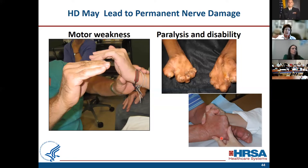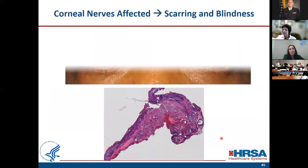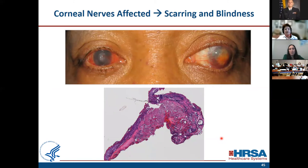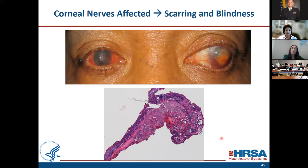Corneal nerves can also be affected by leprosy. When you have infiltration of the nerves and loss of sensation, chronic trauma to the corneas leads to ulceration and scarring. The first sign of eye involvement might be uveitis, which may be painful. But then the corneas become anesthetic, and with chronic trauma, dryness, they become scarred down and blindness ensues.